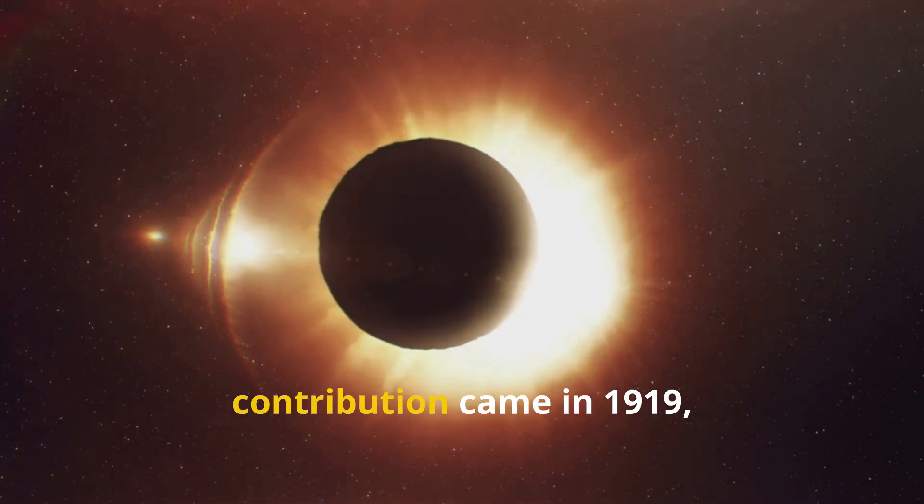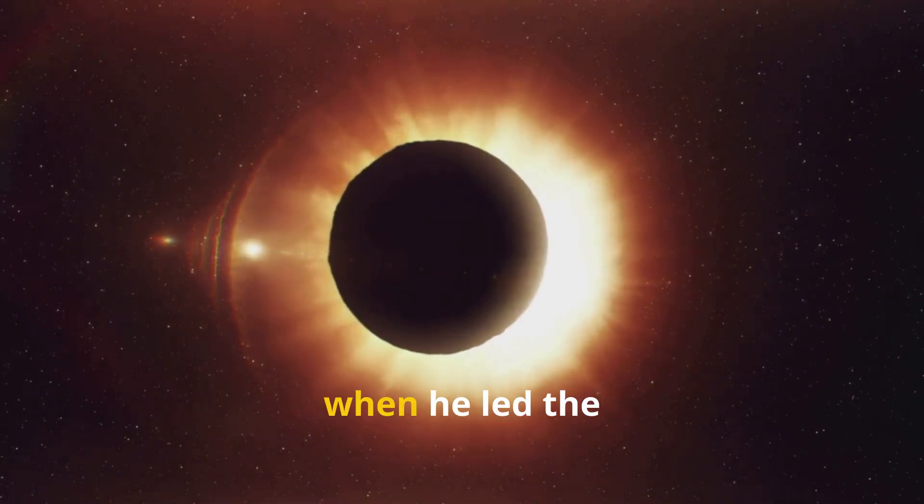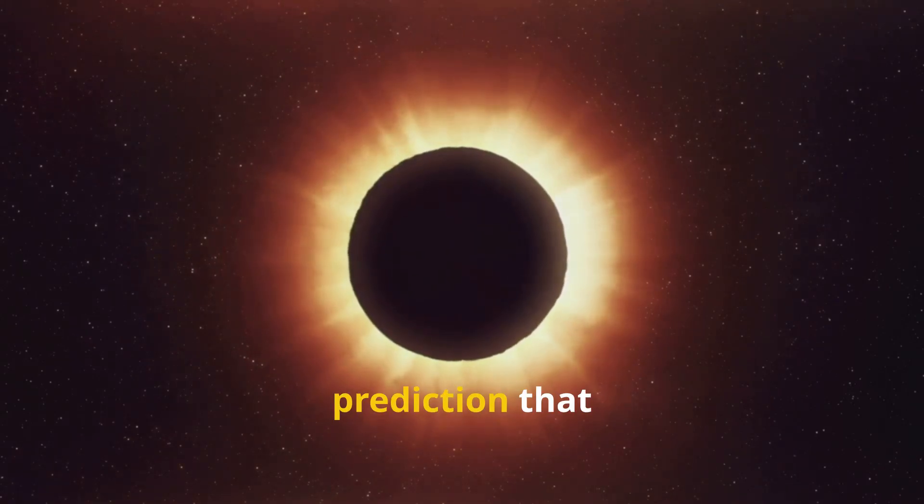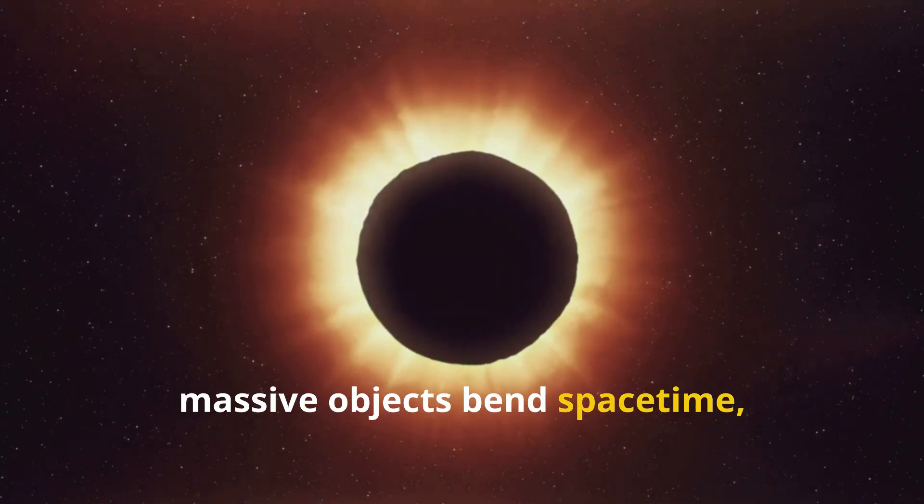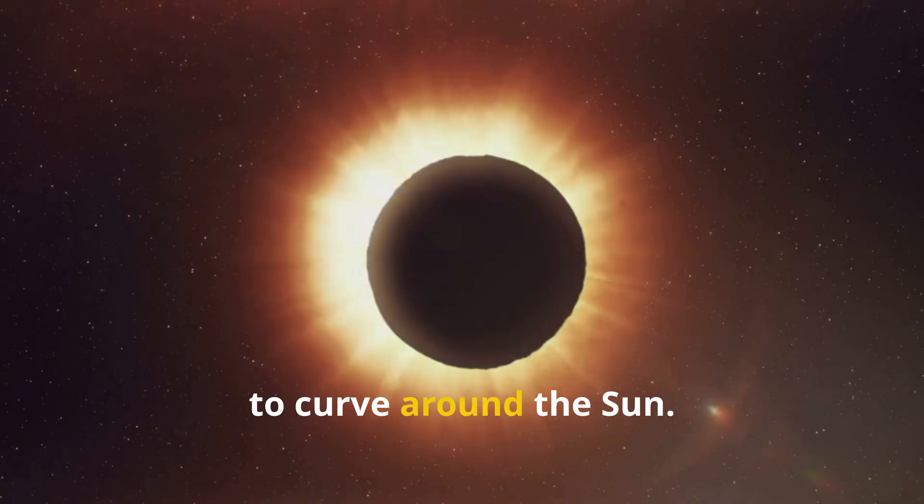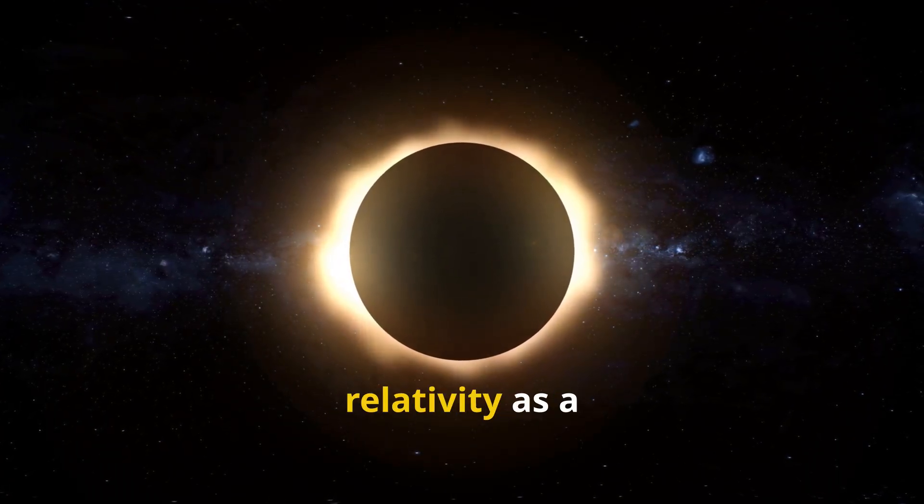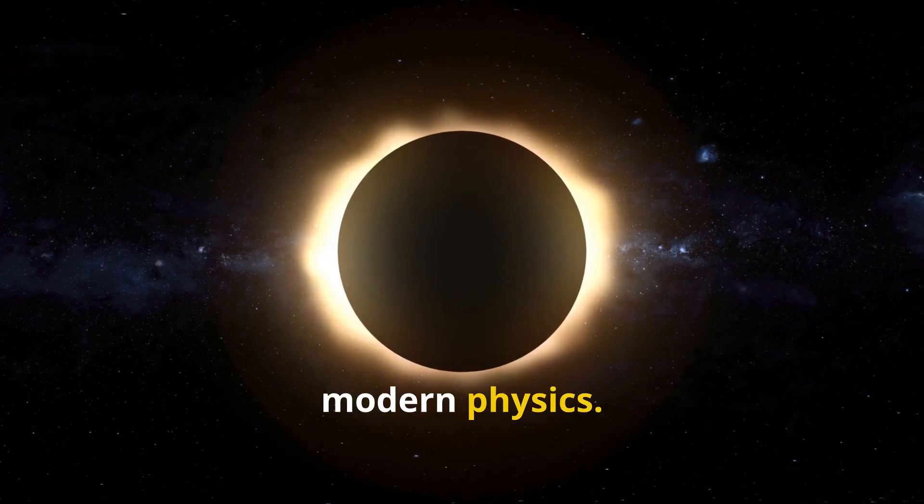But his most famous contribution came in 1919, when he led the solar eclipse expedition that confirmed Einstein's prediction that massive objects bend space-time, causing starlight to curve around the sun. This made Eddington an international figure and established relativity as a cornerstone of modern physics.